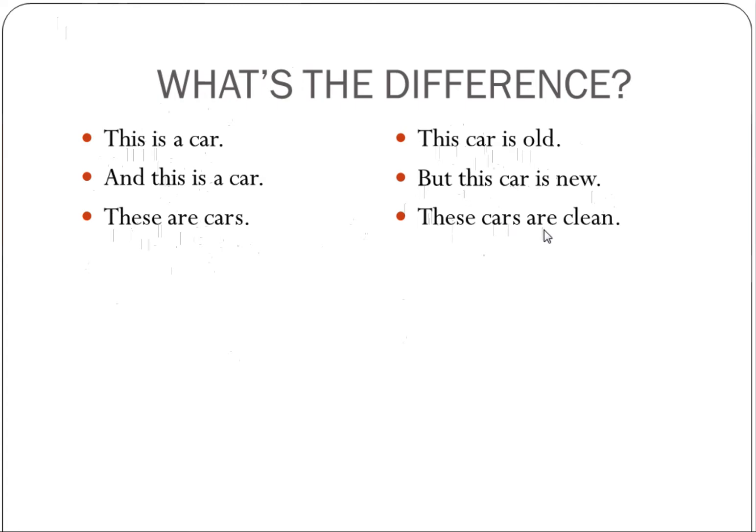Another thing that is helpful to notice is that in these sentences on the left, the purpose, the goal, the job is to name. So once you name the person, the thing that you want to name, you're finished. The sentence is done. It ends. You put a period. This is a car. Done. And this is a car. These are cars. There is no other information included.